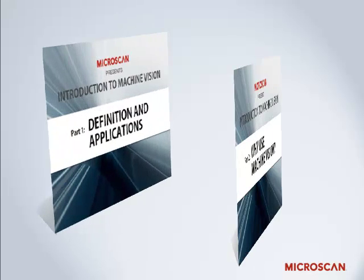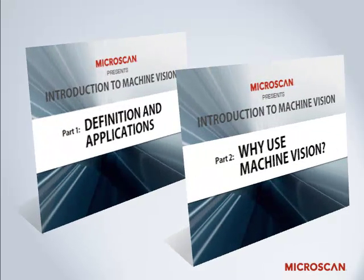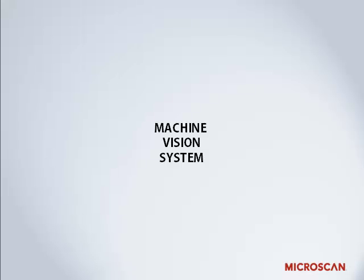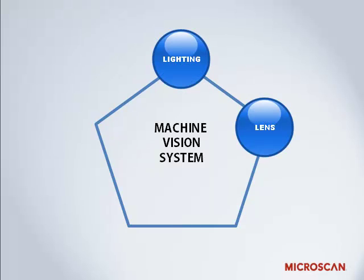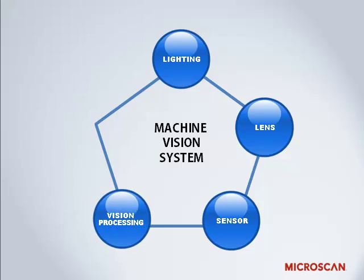If you've tuned in to our previous presentations, then you're already familiar with some of the applications of machine vision and the benefits it brings to the production process. There are typically five components that make up a machine vision system: lighting, lens, sensor, vision processing, and communication.